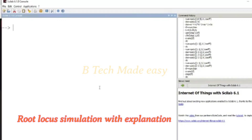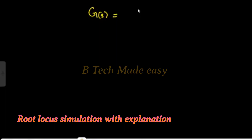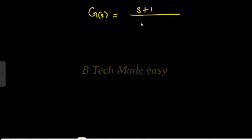The transfer function will be entered in Scilab. The next step is to move the root locus plot and check stability. This is the editor of Scilab. In the editor of Scilab, the transfer function will be entered in the console. The aim is to enter the transfer function. The second transfer function is G(s) equals s plus 1 divided by s squared plus 2s plus 2.